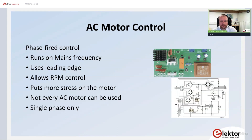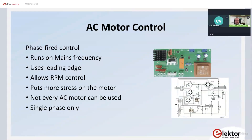For phase fired control — this is also what light dimmers do — it runs on mains frequency, uses the leading edge, and allows RPM control for AC motors. However, you can't use it with any motor. You have to be careful which motor you choose: usually only single-phase motors without a capacitor start should be used. If you have a multi-phase motor, phase fired control is certainly not an option. There was also a project in Electra magazine a year or two ago covering this — it's quite interesting to read through.